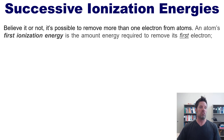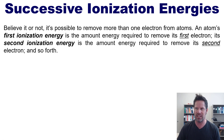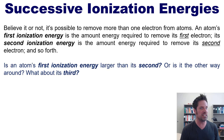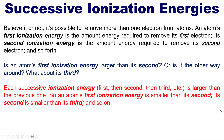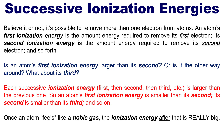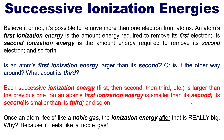It's actually possible to remove more than one electron from an atom. An atom's first ionization energy is the energy required to remove its first electron; the second ionization energy removes the second electron, and so forth. Each successive ionization energy is larger than the previous one. However, once an atom reaches a noble gas configuration, the next ionization energy is dramatically huge — because feeling like a noble gas is every element's dream, that perfect balance, so it doesn't want to lose any more electrons.